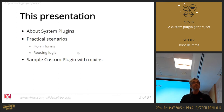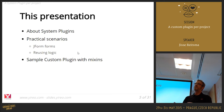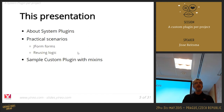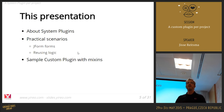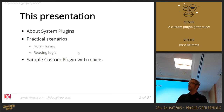One thing I often encounter in custom projects is a customer wanting CCK-like functionality — meaning a Joomla content article alone is not enough and you need to add extra fields. Instead of replacing the whole content infrastructure with a full-blown CCK extension like K2 or Flexi Content, you can use a Joomla plugin to add things to JForm.